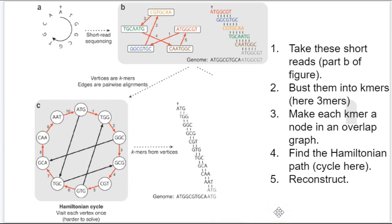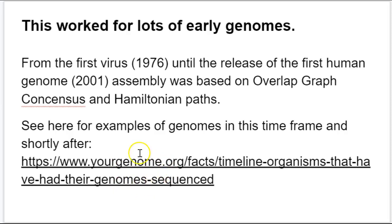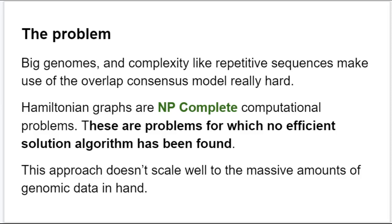You can do that, and it worked a lot for the early genomes. It's the approach that was used — from the first virus sequenced all the way up to the release of the first human genome in 2001. All of the assemblers were based on overlap graph consensus, and you found the sequence using a Hamiltonian path approach. That's a generalization, but it's largely true. You can see what other genomes were assembled using that approach at the link provided. The problem — and I'm going to tell you the problem in the next video part for this lecture.